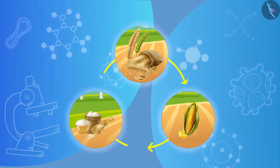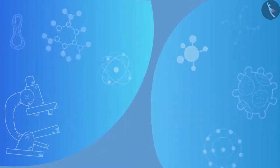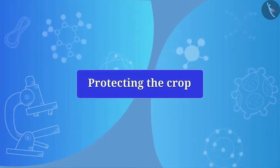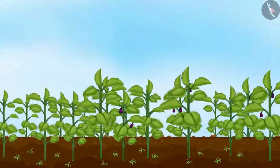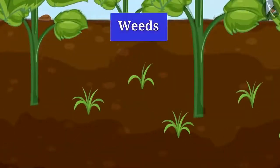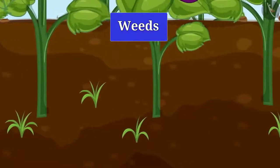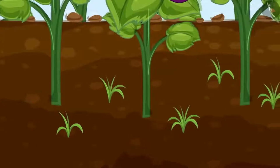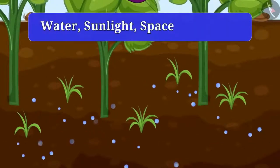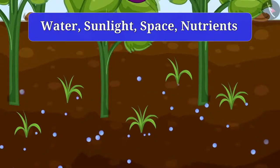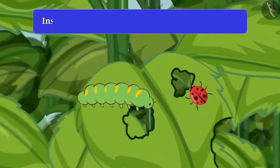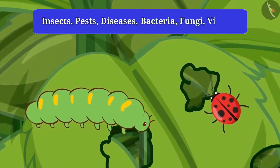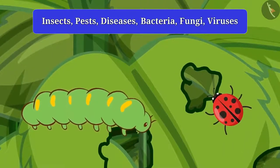So you have seen how crop production can be increased in various ways. Let us now understand how crops can be improved by protecting the crop. Friends, if you look carefully at the grown cropland, you can see small unnecessary plants growing with the crop — these are called weeds. These weeds compete for water, sunlight, space and nutrients, so it is very important to remove them. Apart from weeds, insects, pests and diseases also destroy the crops. Diseases in crops are caused by bacteria, fungi and viruses.